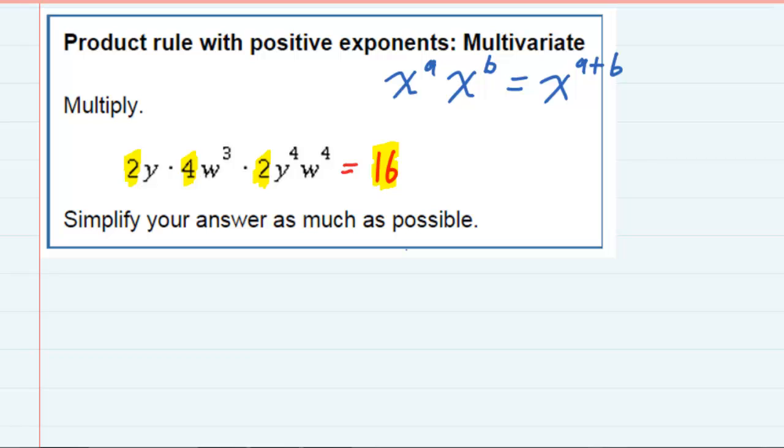But when I look at the variables, I see that I have a y here and I've got y4 here. The first y, since there's no number there, I know that that's being raised to the first power. So I've got y1, and then I've got y4, they're being multiplied, so I can use this rule that says I keep the base and I add the exponents. So 1 plus 4 gives me y5. That's taking care of the y's.